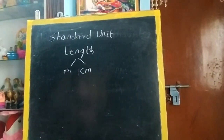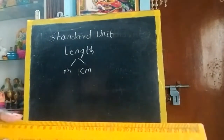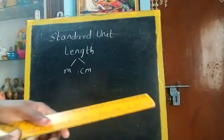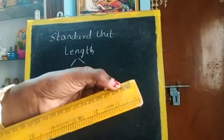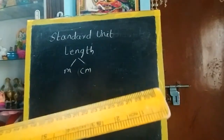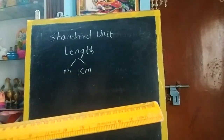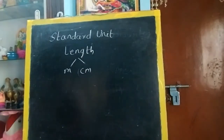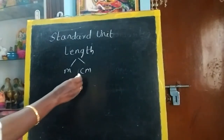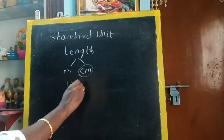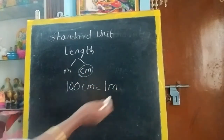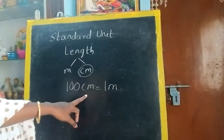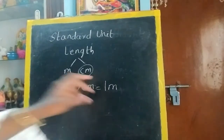One more thing I wanted to say — if you see your scale, there will be 15 centimeters on a small scale. If you see a long scale, there will be 30 centimeters. So if you join 100 centimeters, it will make 1 meter. That is, 100 cm joined will make 1 meter. So centimeter is smaller than meter.